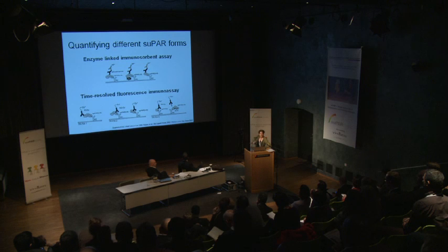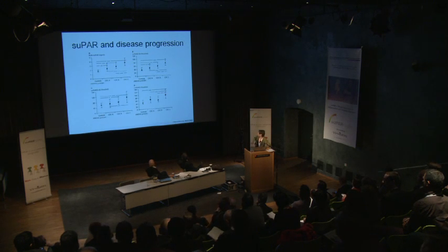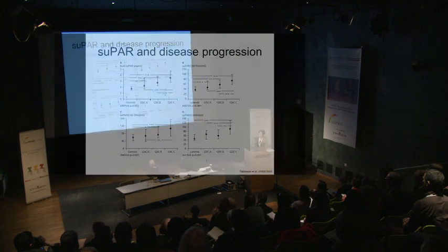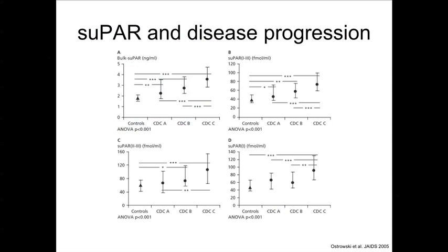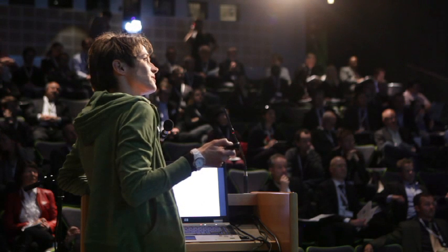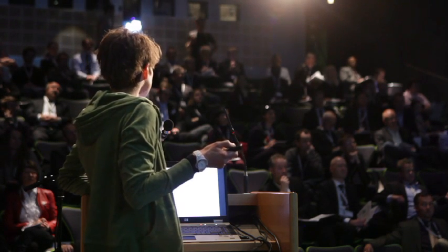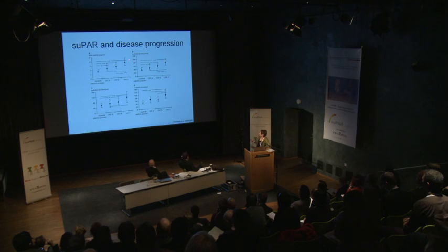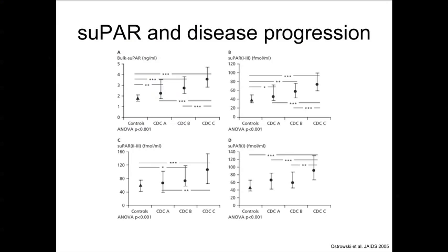By applying these assays in HIV-infected patients, we were first able to confirm the finding by Sidenius and colleagues, demonstrating that ELISA-measured SUPAD increased in HIV-infected patients with clinical disease progression. We were also able to extend that finding to show that SUPAD levels were higher in patients compared to healthy individuals. This finding extended to include the full receptor, the receptor encompassing domain 2 and 3, and the domain 1 fragment — all measured SUPAD forms increased with HIV disease progression and were higher in HIV-infected patients compared to healthy individuals.